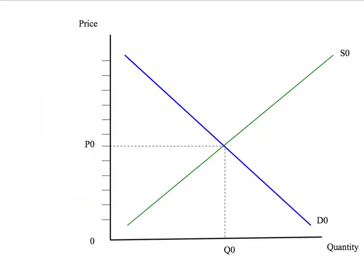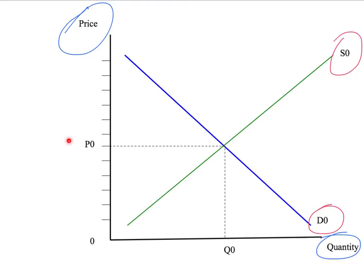As usual, we start with our standard diagram, price on the vertical axis, quantity on the horizontal axis. We start with our initial equilibrium. That's given where our initial demand curve, D0, and our initial supply curve, S0, cross. So our initial equilibrium is given by the price P0, and the quantity Q0.